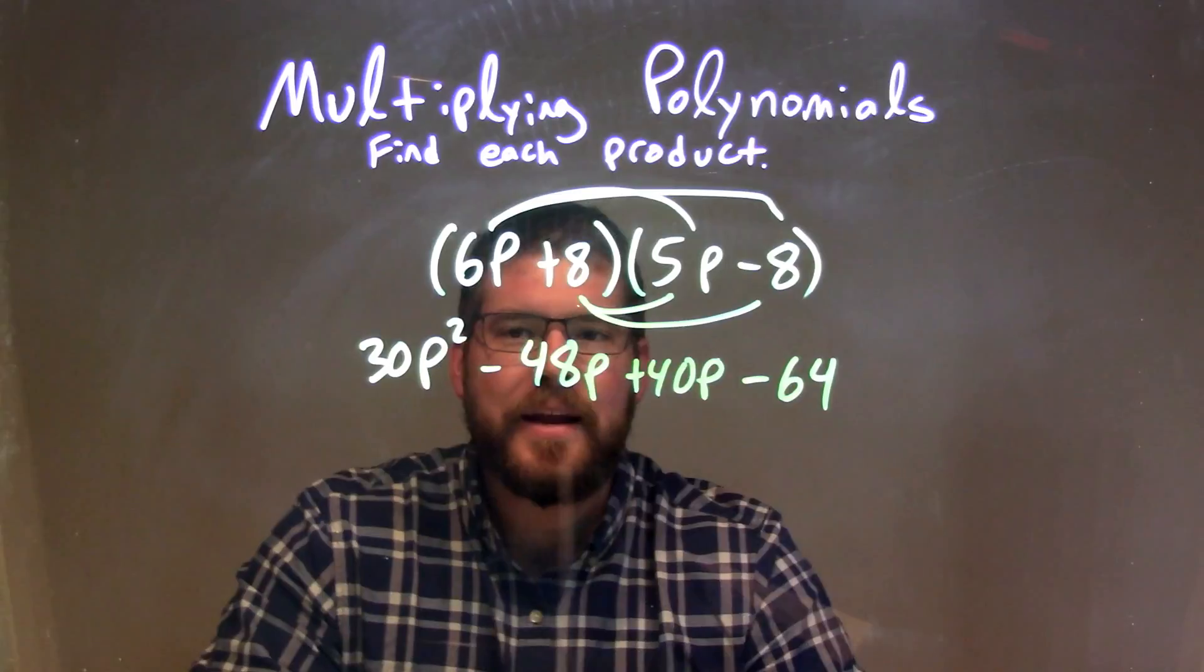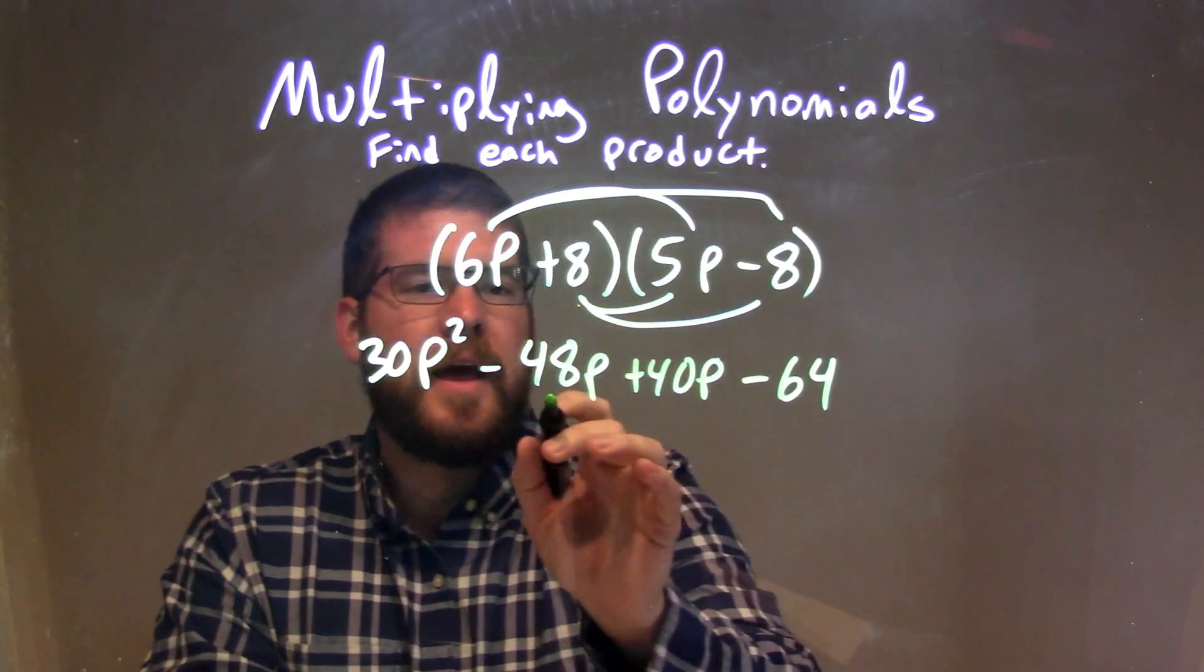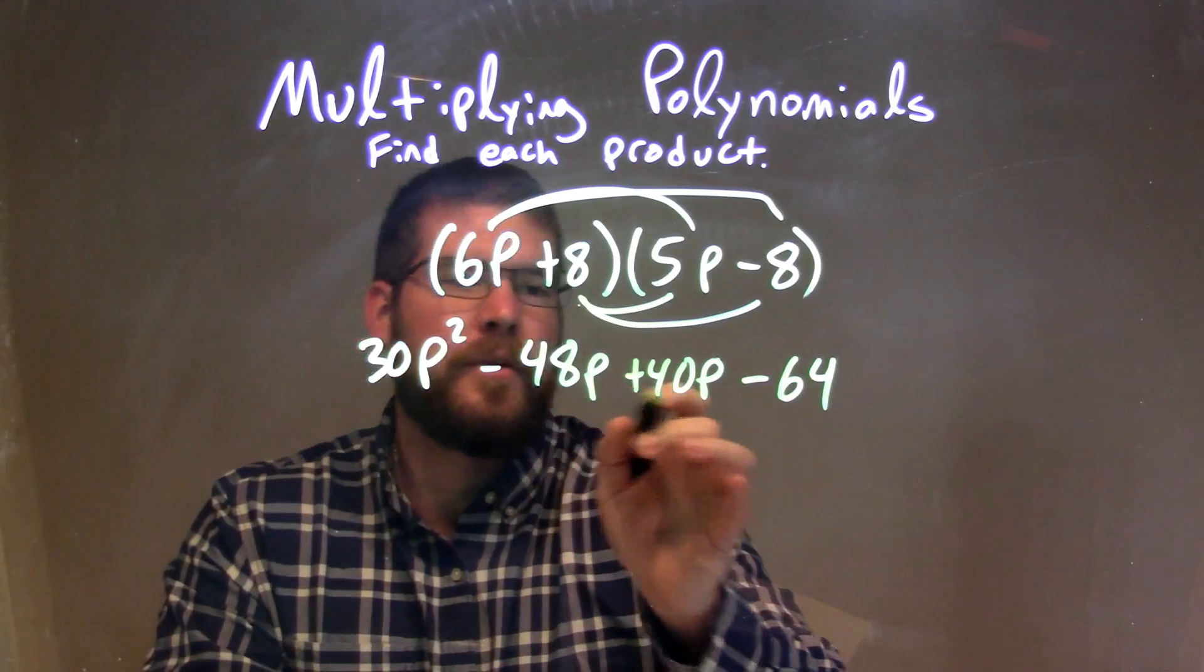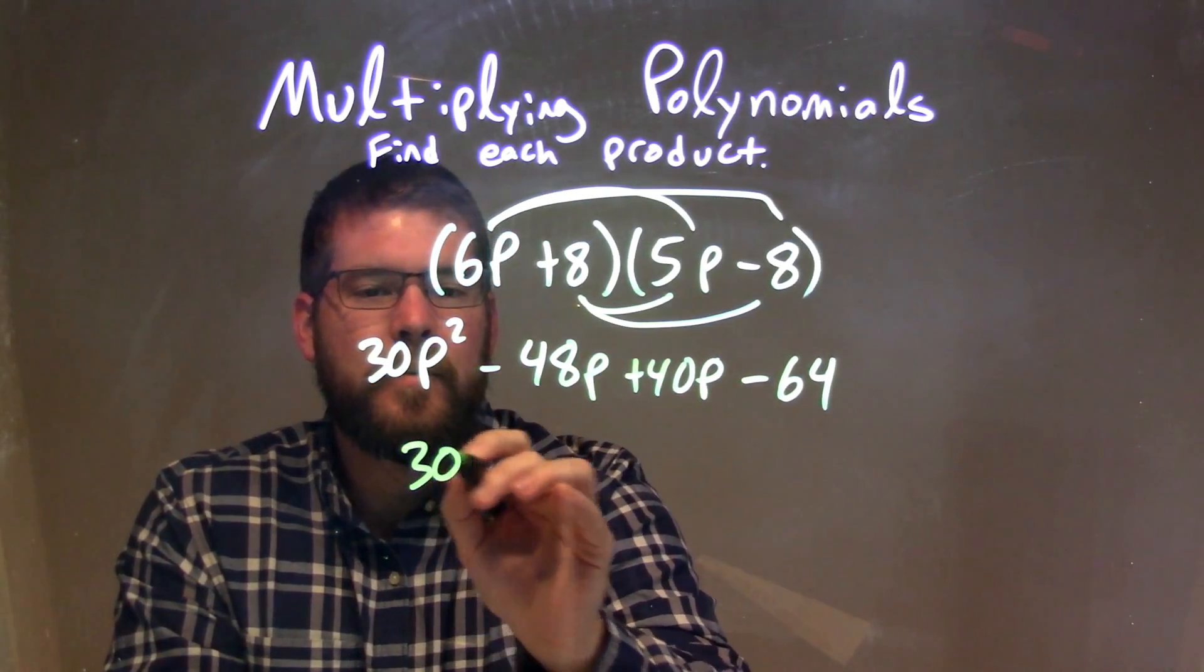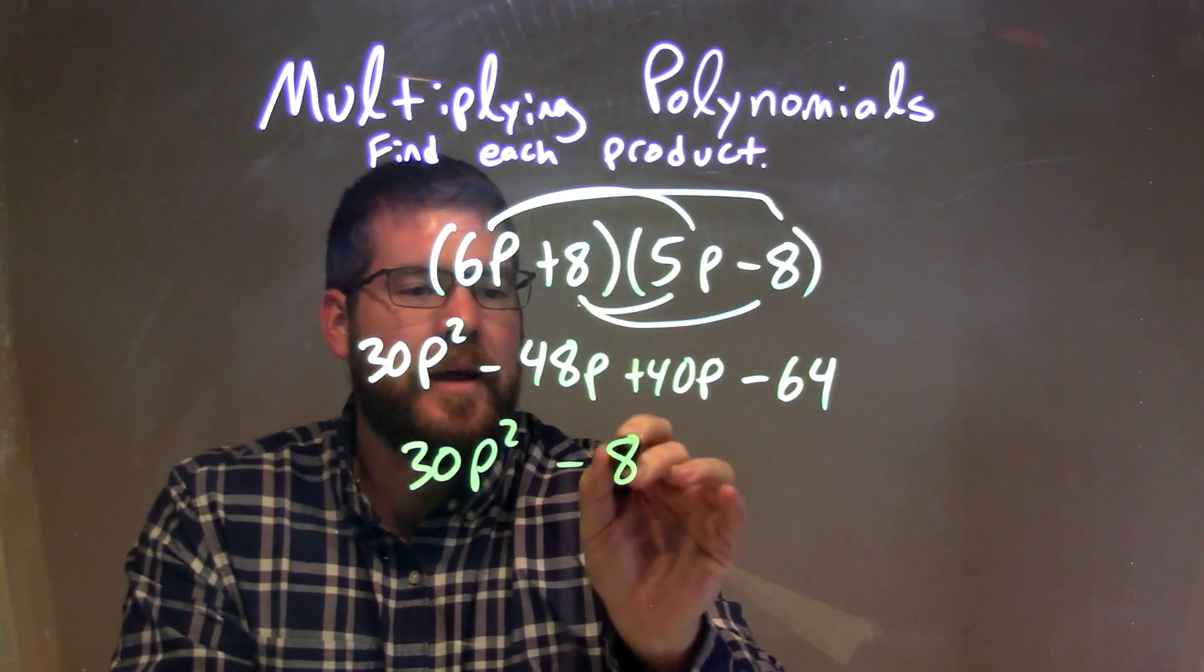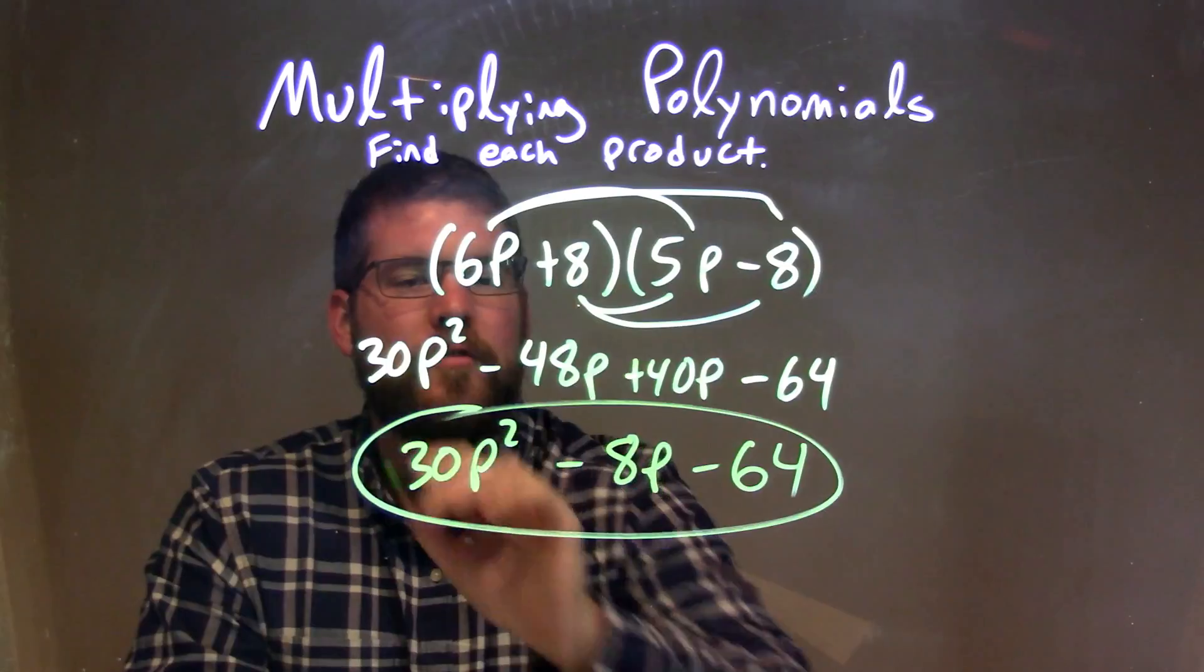Now we need to combine our like terms. The only like terms we have are the p's, so minus 48p plus 40p is minus 8p. So we have 30p squared minus 8p minus 64, and that is our final answer.